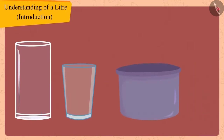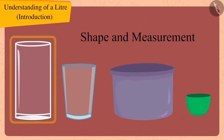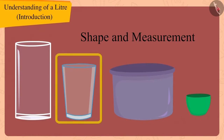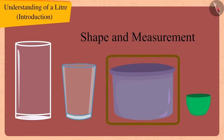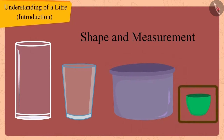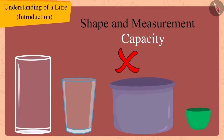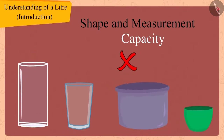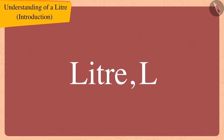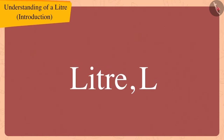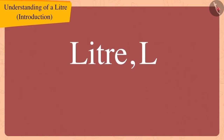Glass or any utensils may be of one kind, but due to different shapes and measurements, we cannot use them to measure the capacity of other utensils. To solve this problem, we use a unit called litre. We write this as L.